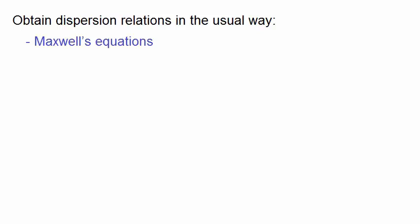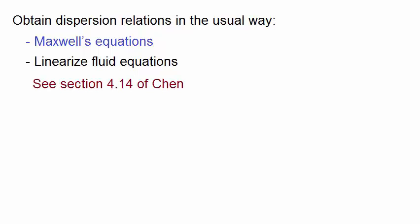We now need to obtain dispersion relations for these two situations. And we do it in the usual way. That is, we need to solve a couple of Maxwell's equations, coupled with the linearization of the fluid equations. For details on how this is done for this situation, see section 4.14 in Chen. The final result is that the ordinary wave has this dispersion relation, which is exactly the dispersion relation we saw in a previous lecture for an electromagnetic wave in a plasma without an applied magnetic field. The two are identical.